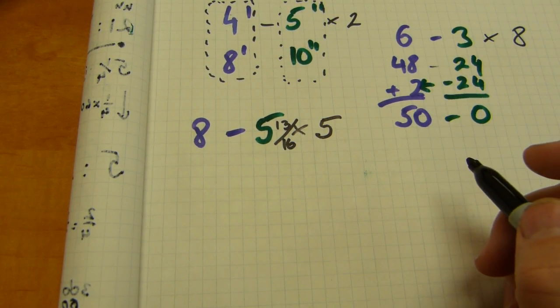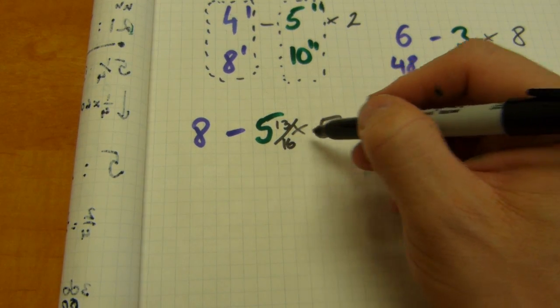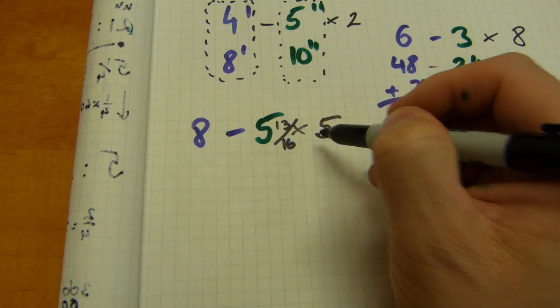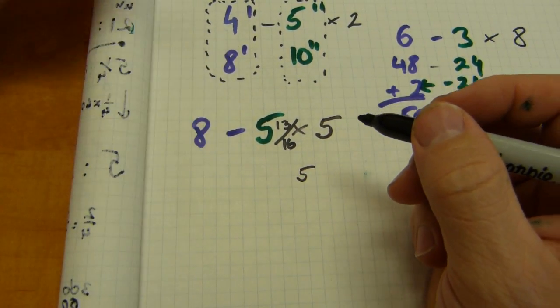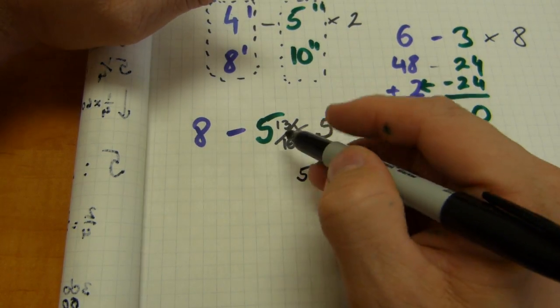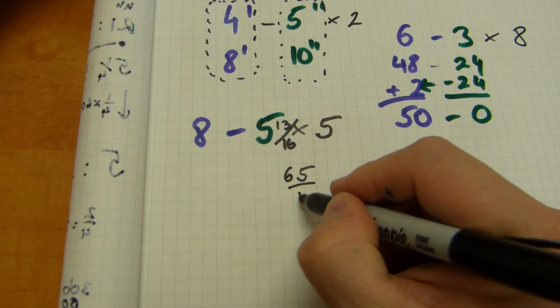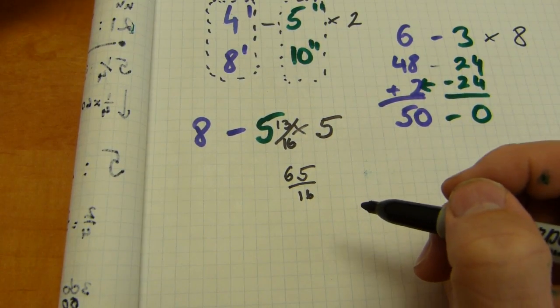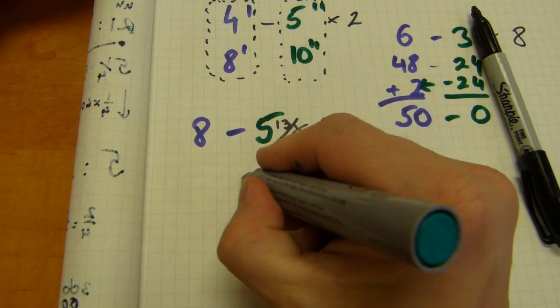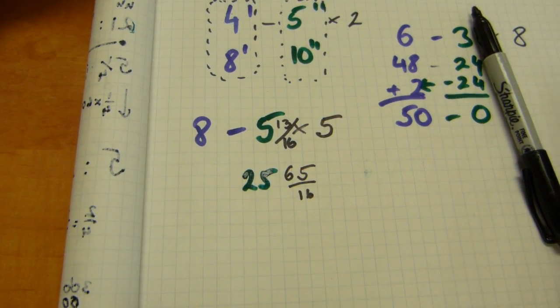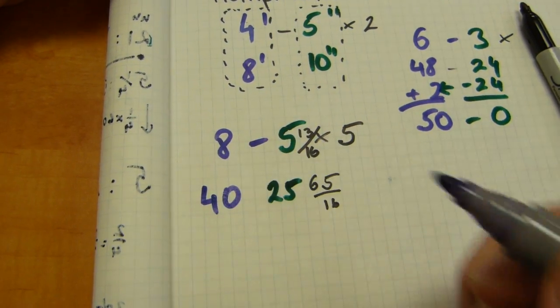So 13/16ths needs to be multiplied by 5. Standard fraction multiplication - multiply a fraction with a whole number. 5 by 3 is 15 plus the one I'm just carrying on my hand here. 1 by 5 is 5 plus one more is 65/16ths in the fractions column. Now the inches: 5 by 5 is just 25. 8 by 5 for the feet is 40 feet.